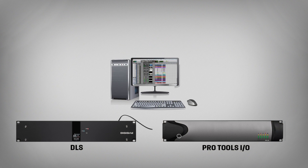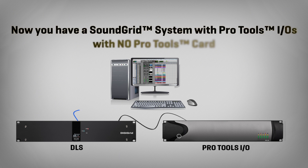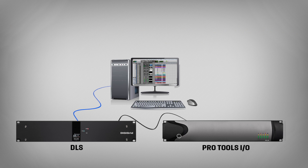With studio gear being updated so much in the last few years, a lot of studios and home users have Blueface I.O.s or other third-party DigiLink-enabled I.O.s on the shelf gathering dust. We're here to tell you we can help give them a new lease of life. Connect an I.O. up to your DigiGrid DLS or DLI with a DigiLink cable, then run a Cat5e or Cat6 cable from the first port on the back of the DLS or DLI into your computer. You now have a working system using your Pro Tools I.O. and no Pro Tools card. The DigiGrid DLS and DLI Advanced Audio Interfaces can improve your workflow and add functionality to your studio.